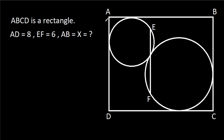In this video, we have been given that ABCD is a rectangle and AD is 8, EF is 6, and EF is passing through the point of contact of both circles, and AB is X. We have to find X.